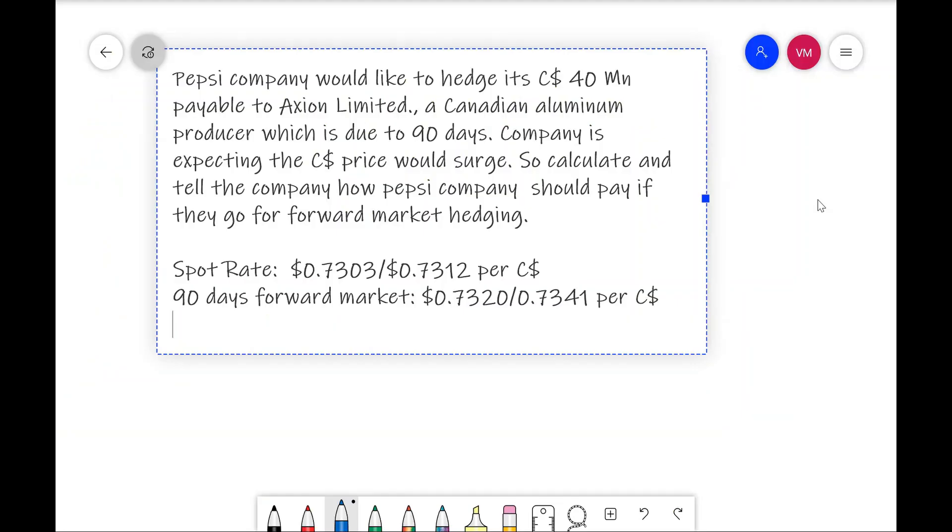In the problem, they are given the data like this. Pepsi company would like to hedge its 40 million Canadian dollar payable to Axion Limited, a Canadian aluminum producer, which is due in 90 days. The company is expecting the Canadian dollar price would surge. So, we need to calculate for the Pepsi company, if they go for forward market hedging, how much they should pay in US dollar.